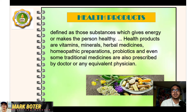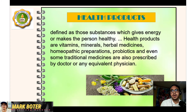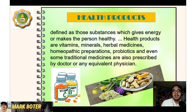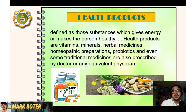Health products are defined as those substances which give energy or make a person healthy. Health products include vitamins, minerals, herbal medicines, homeopathic preparations, probiotics, and even traditional medicines. They are also prescribed by doctors or any equivalent physician. Itong mga health products na ito ay pwede nating mabili sa supermarket, sa pharmacies, sa hospitals, o kahit na sa tindahan o convenience store. May alam ba kayong examples ng health products na ginagamit ngayon? Maaari ninyong i-share at isulat sa papel at i-submit sa darating na araw kasama ng inyong module.